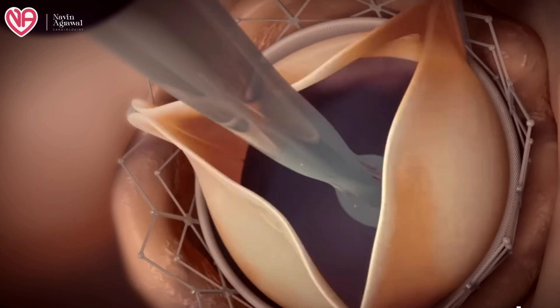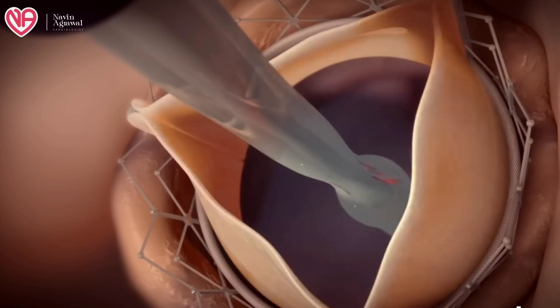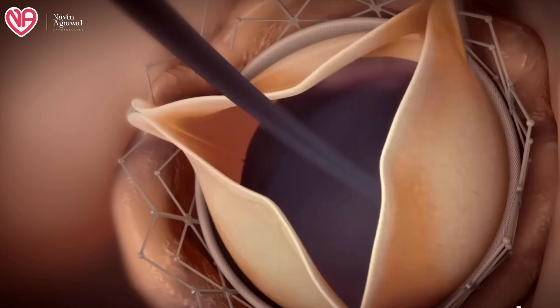Once the stent gets deployed, the valve starts functioning automatically. Basically, this is a tissue valve which has been placed in a stent mesh, and this stent mesh is put over the previously deformed aortic valve which was not functioning properly.